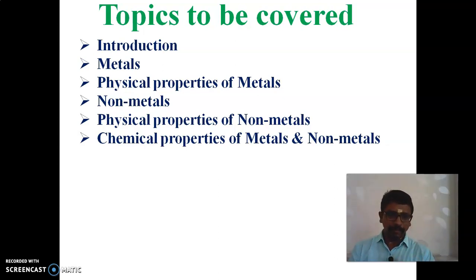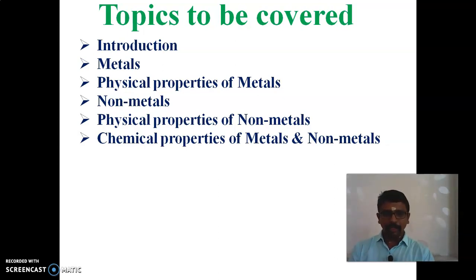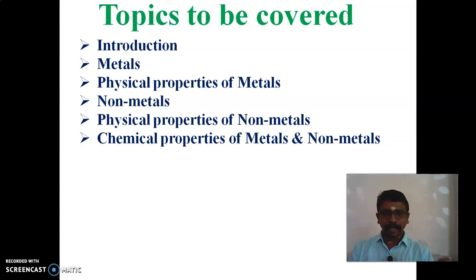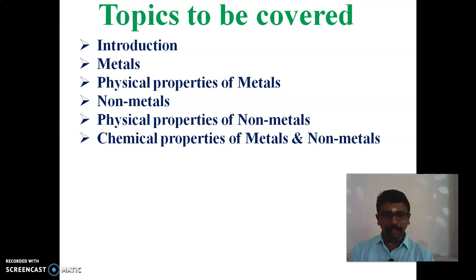Chemical properties means what happens when a metal or non-metal is reacted with water, acids, base, etc. Chemical properties means the compound or element that is reacted with some other compound or substance — a reaction will be taking place. Physical property means their appearance.